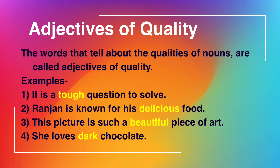The words that tell about the qualities of a noun are called adjectives of quality. Noun kaisa hai — if we can understand that from the sentence, it is an adjective of quality. For example: 'It is a tough question to solve' — tough tells us the quality of the question. Similarly, 'easy' in 'It is an easy question to solve' is an adjective of quality.